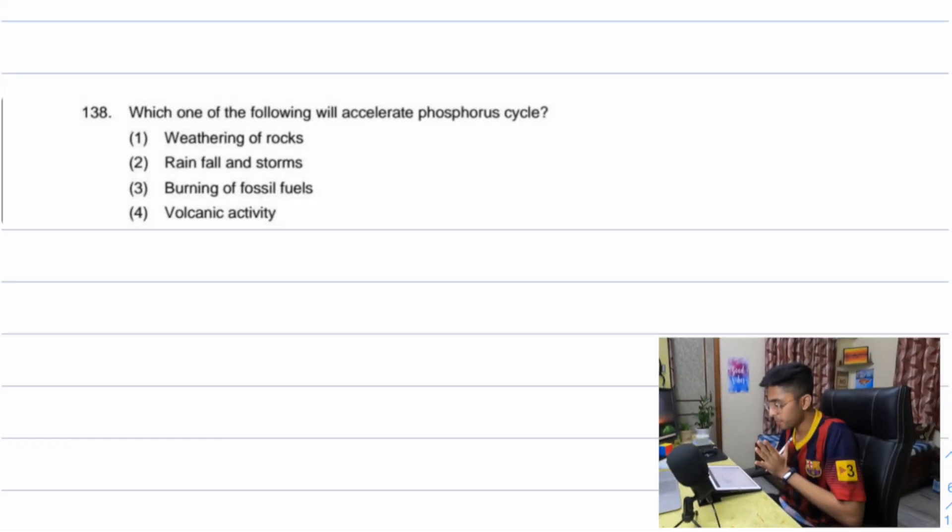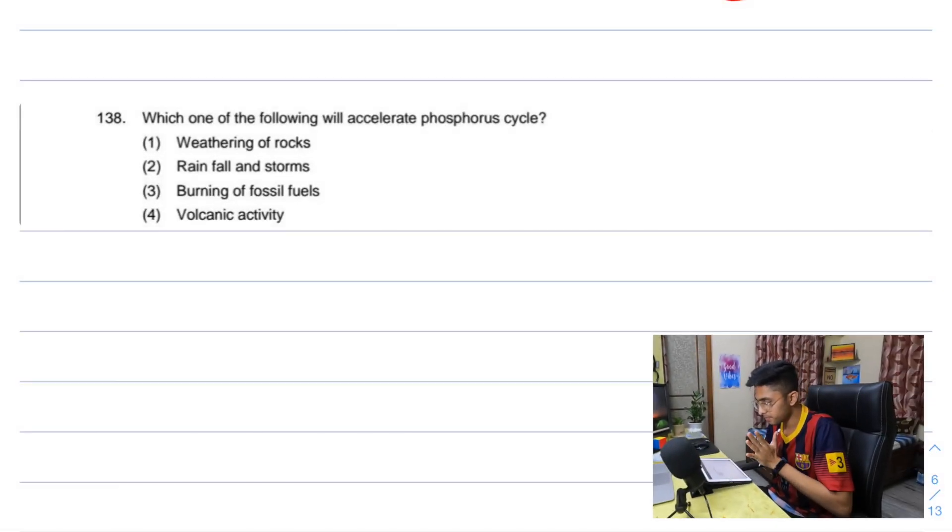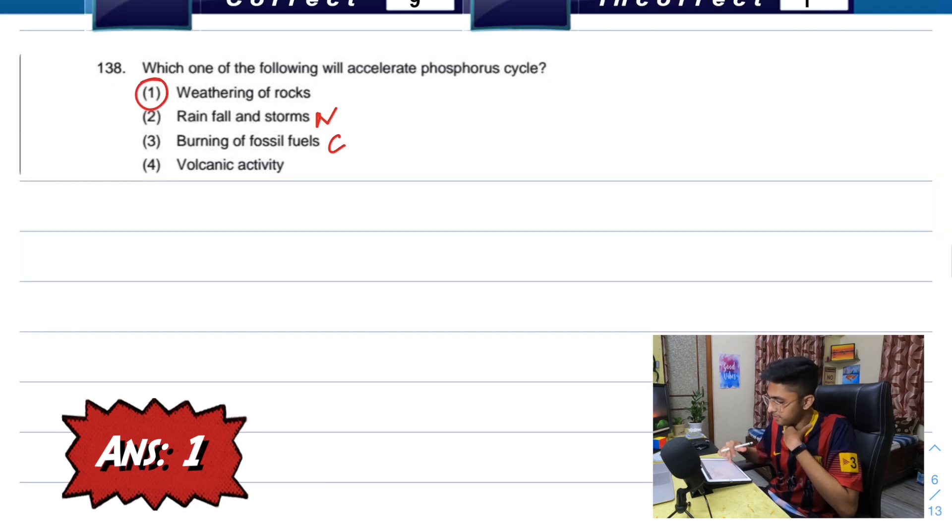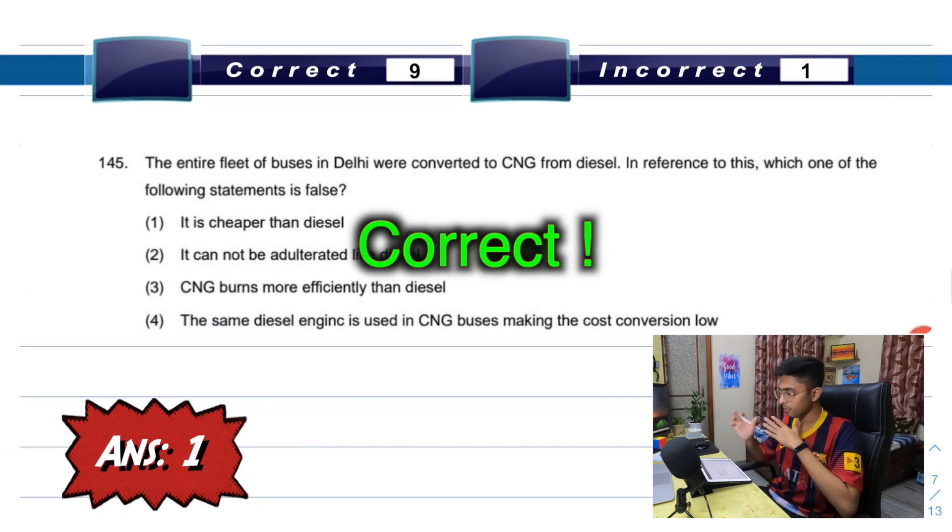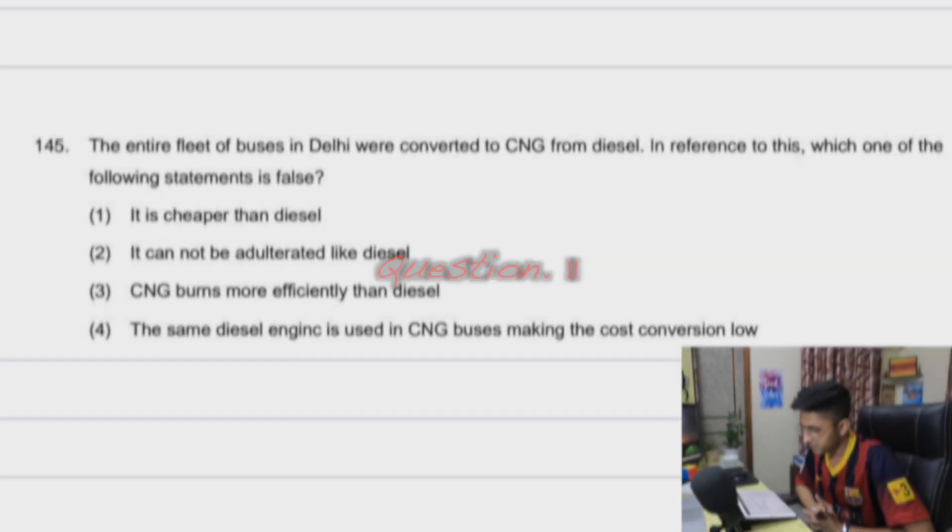Which one of the following will accelerate phosphorus cycle? I know nitrogen cycle is related to lightning and roots. Weathering of rocks - phosphorus in the rocks is found in the rocks. Rainfall and storm is for nitrogen. Burning of fossil fuels - carbon. Volcanic activity, I don't know, sulfur? Why is this there in biology though? The environment chapter. I would just go for rocks. Rocks might have the mineral.